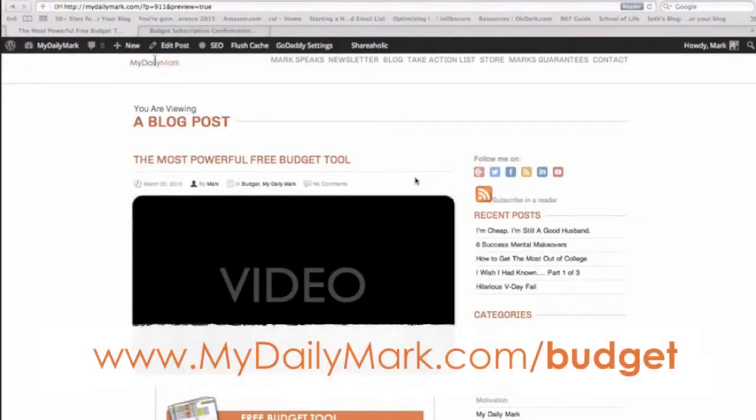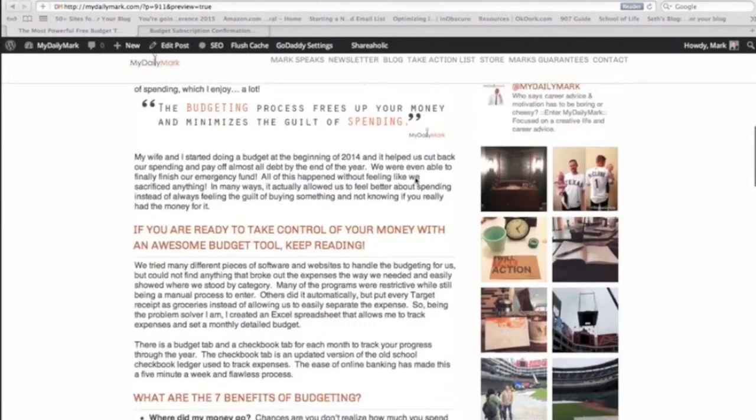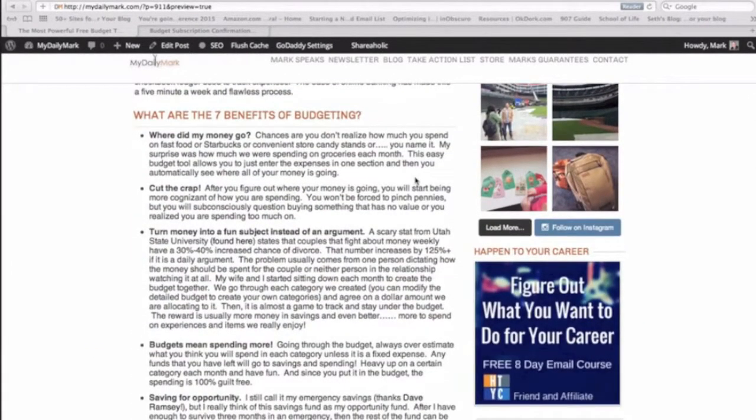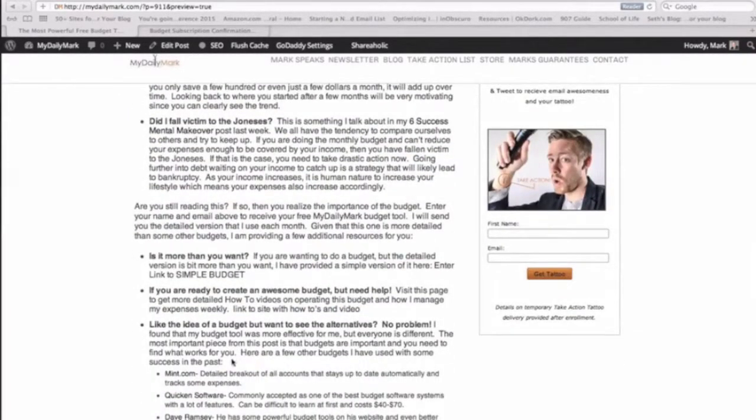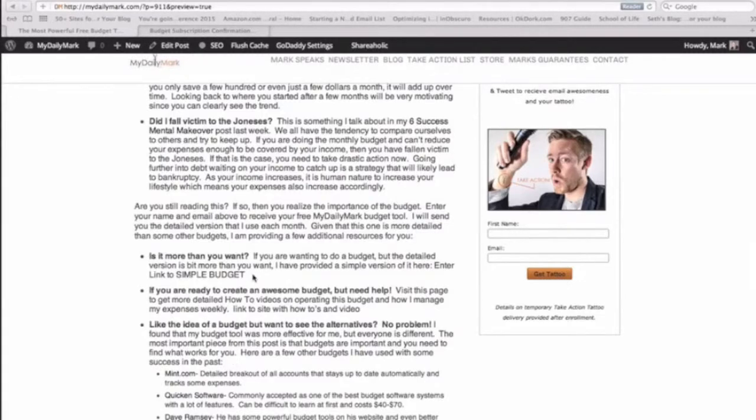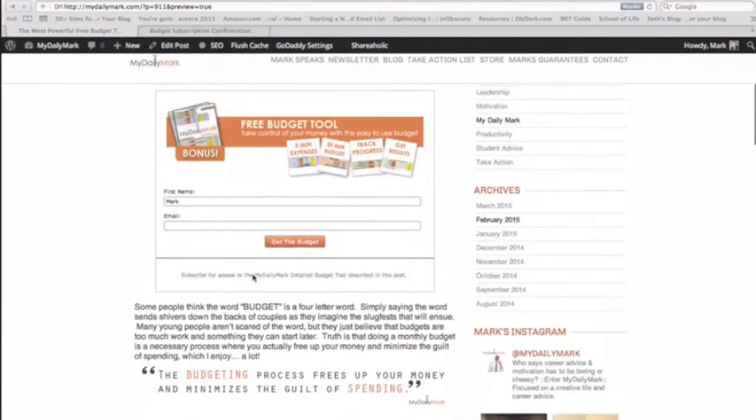It's very simple to download the budget. All you have to do is go to MyDailyMark.com/budget, then I'll bring you to this post. This post goes over details about this budget as well as the seven benefits of budgeting. I also included a few other examples down here of what you can use if you didn't want to use this type of detailed budget, including my simple budget. In order to download the detailed budget, all you have to do is enter your first name and email address and hit get budget.